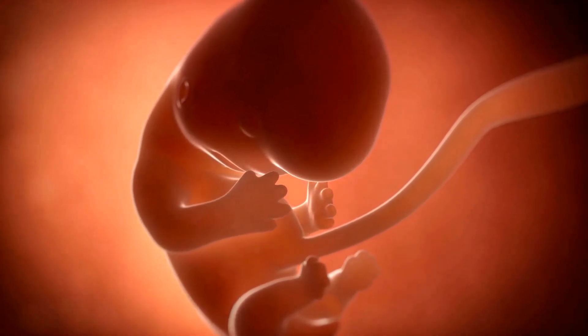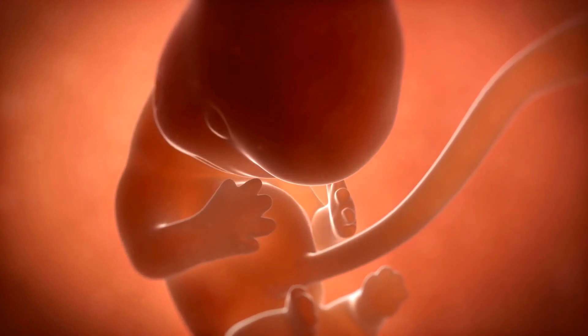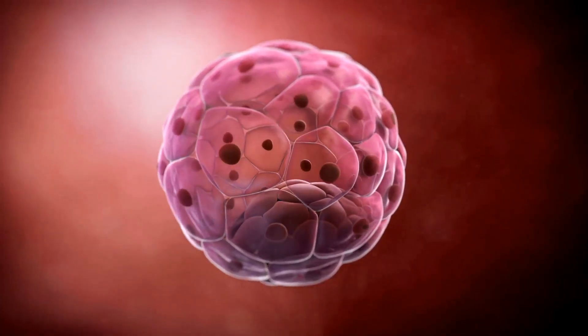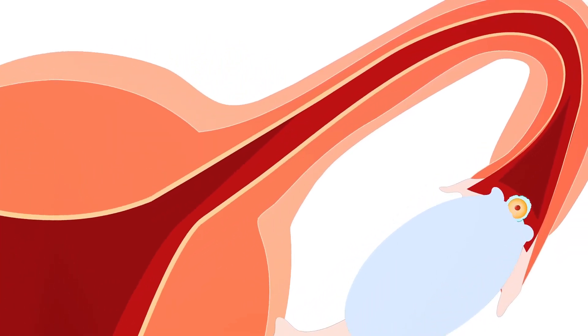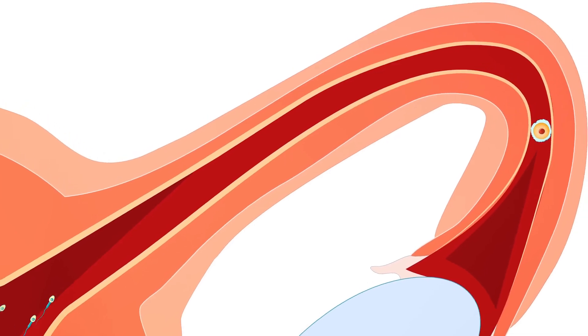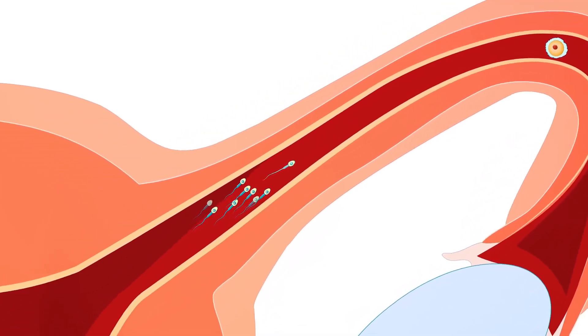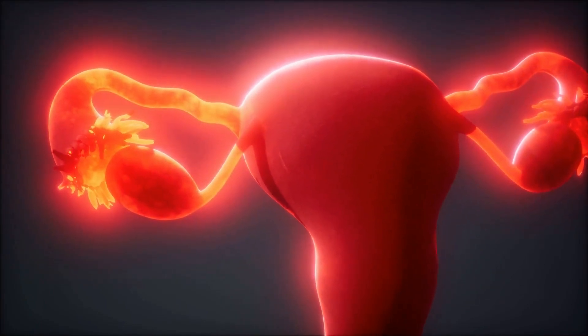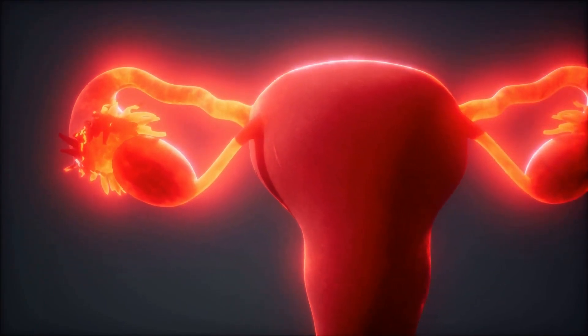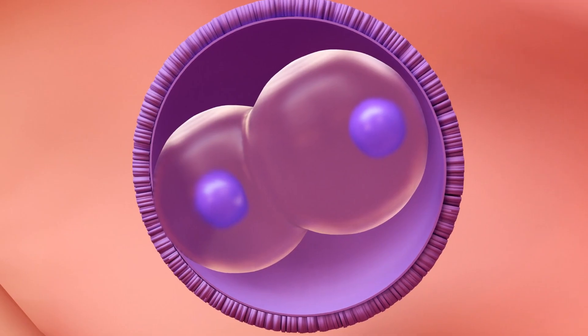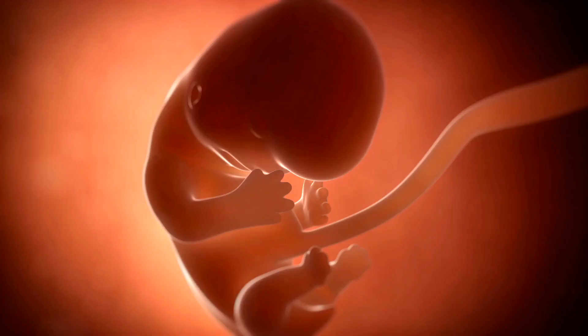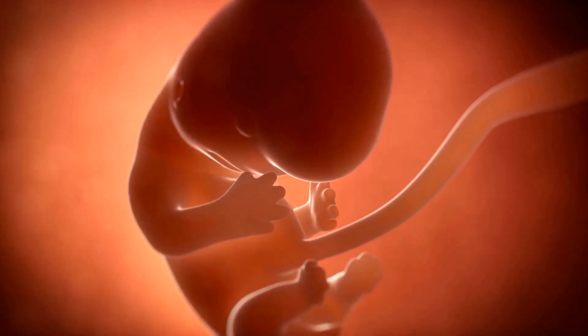This is the first stage of a process called embryogenesis, the development of an embryo. Within a matter of days, the morula transforms into a blastocyst, a hollow sphere of cells with an inner cell mass. The outer layer of cells, known as the trophoblast, will help the blastocyst attach itself to the wall of the uterus. This process, known as implantation, is when the blastocyst burrows itself into the lining of the uterus. It's here that the blastocyst officially becomes an embryo, and starts to receive nutrients from the mother's body, allowing it to grow and develop further.